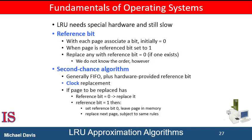Many systems do provide some help in the form of a reference bit. The reference bit for a page is set by the hardware whenever that page is referenced. Reference bits are associated with each entry in the page table. Initially all bits are cleared to zero by the operating system. As the process executes, the bit associated with each page referenced is set to one by the hardware. After some time, we can determine which pages have been used and which have not by examining the reference bits, although we don't know the order of use. This information is the basis of many page replacement algorithms that approximate least recently used replacement.